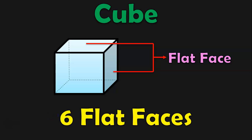What are they? The top face, bottom face, the two side faces, the front face, and the back face. Totally, in a cube, there will be six flat faces.